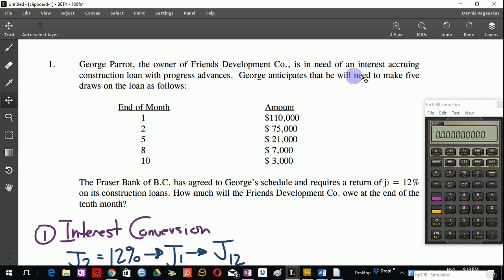So that's what this problem is referring to, this construction loan here. It's an interest accruing construction loan. Interest accruing—accrue means to collect, to store up. So interest is stored up, is collected, and there's no payments during the life of that construction loan. Everything is paid in full. All the principal and all the interest accrued is paid in full at the end of the loan term. So in this case, that's at the end of the 10th month right here, we're told at the end of the 10th month.